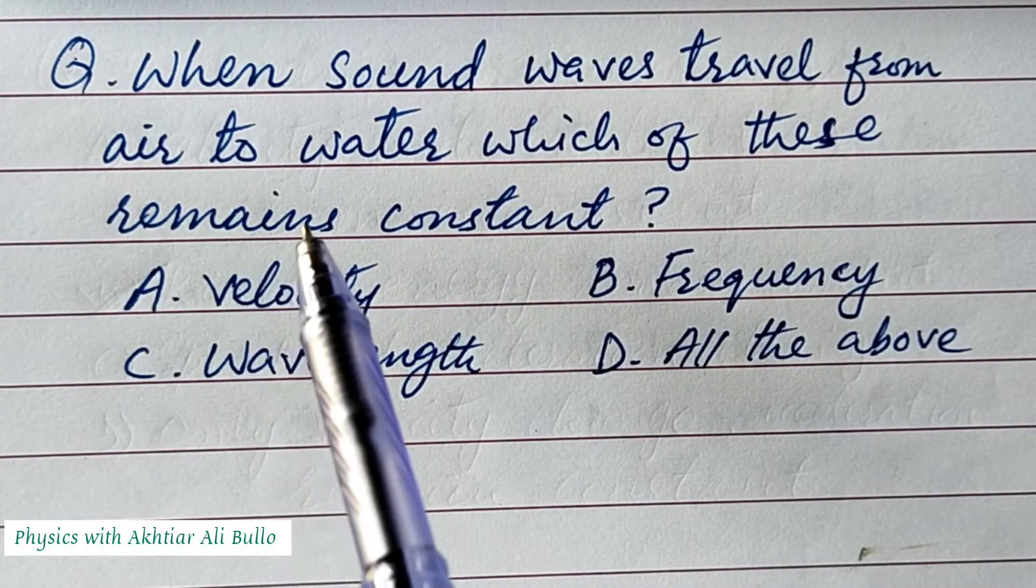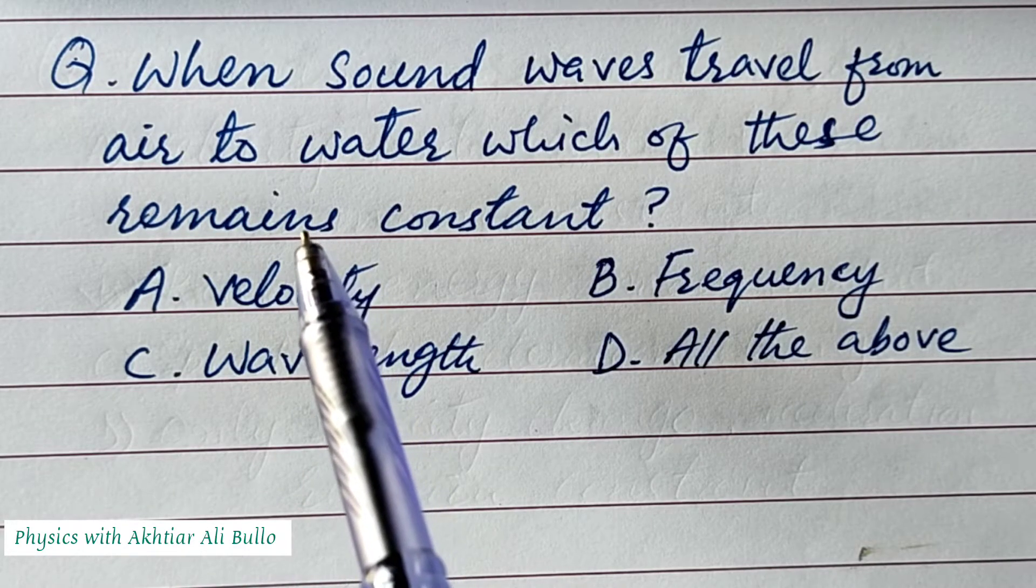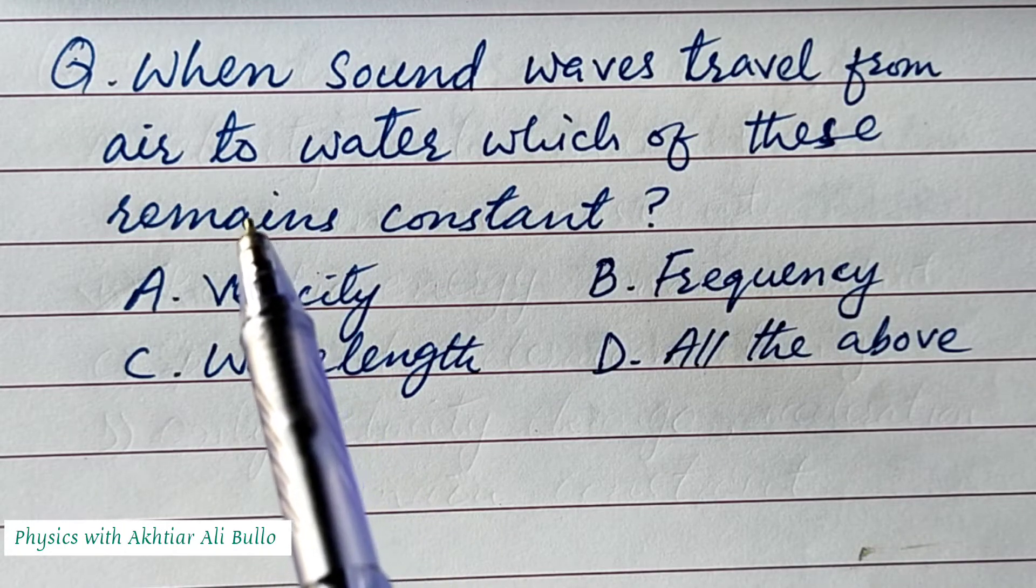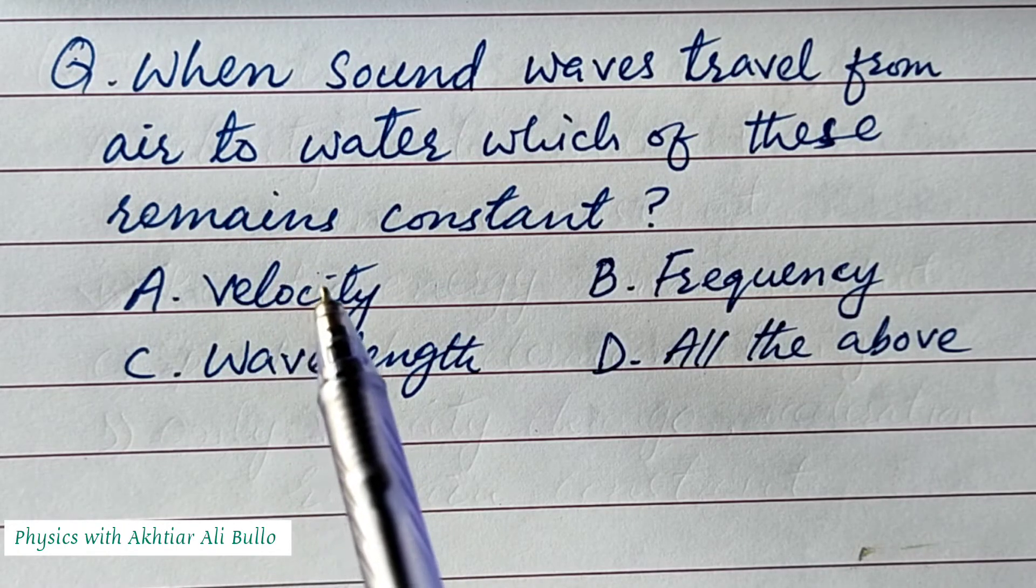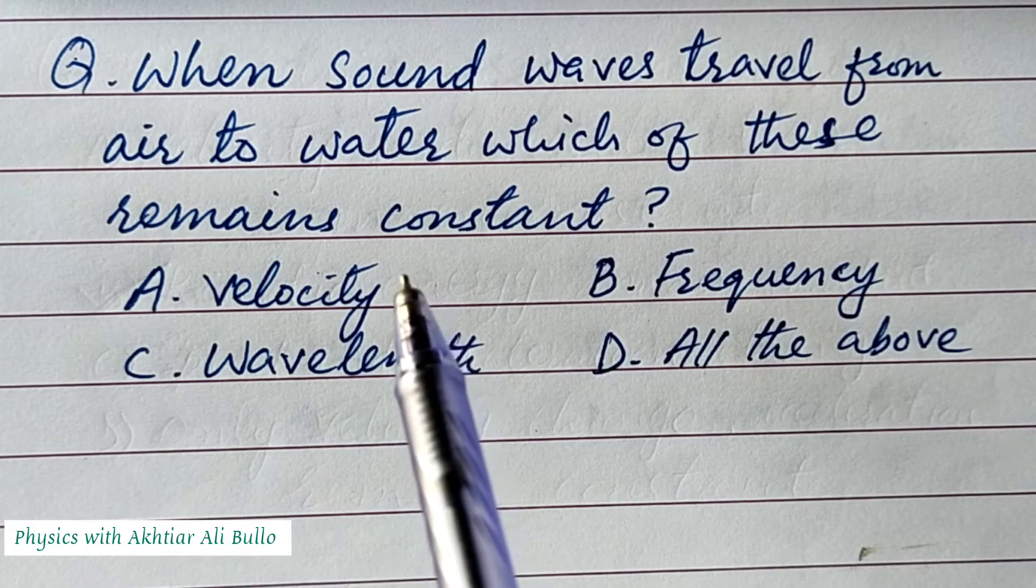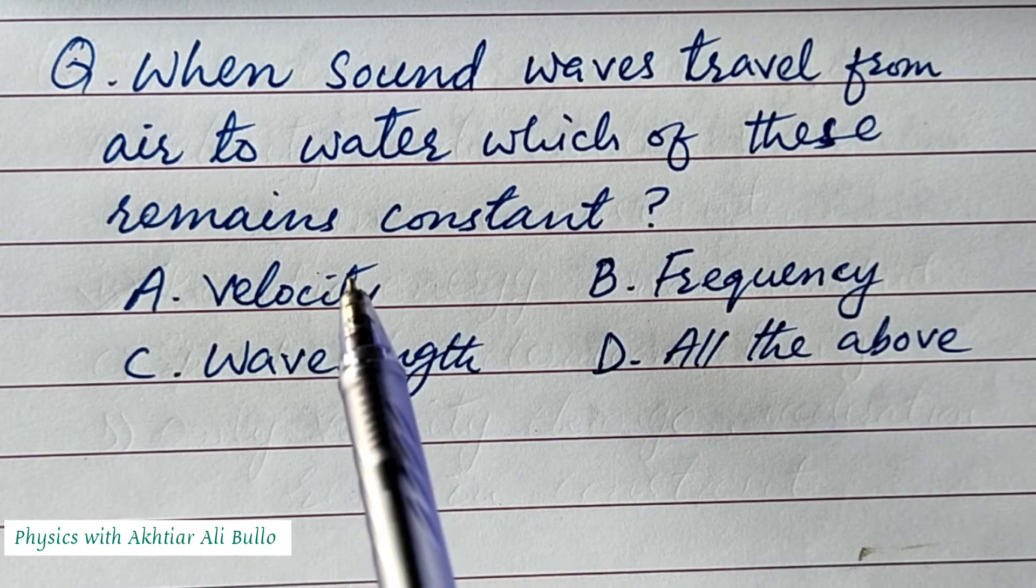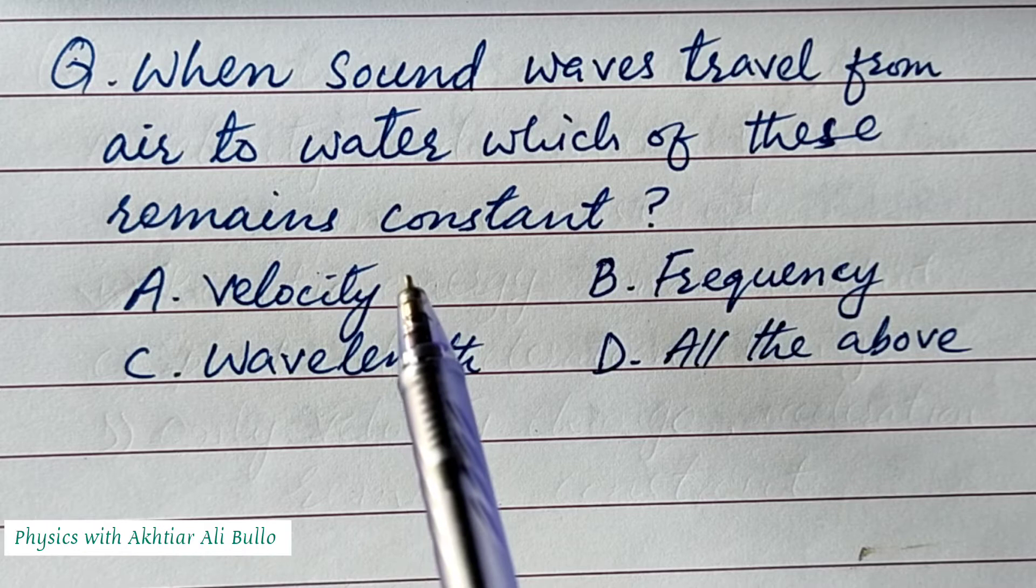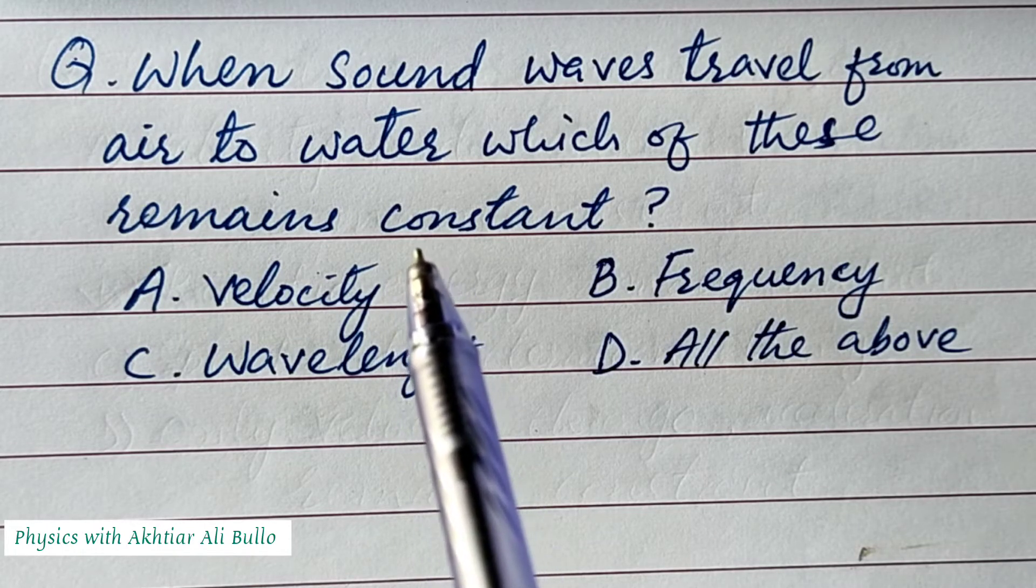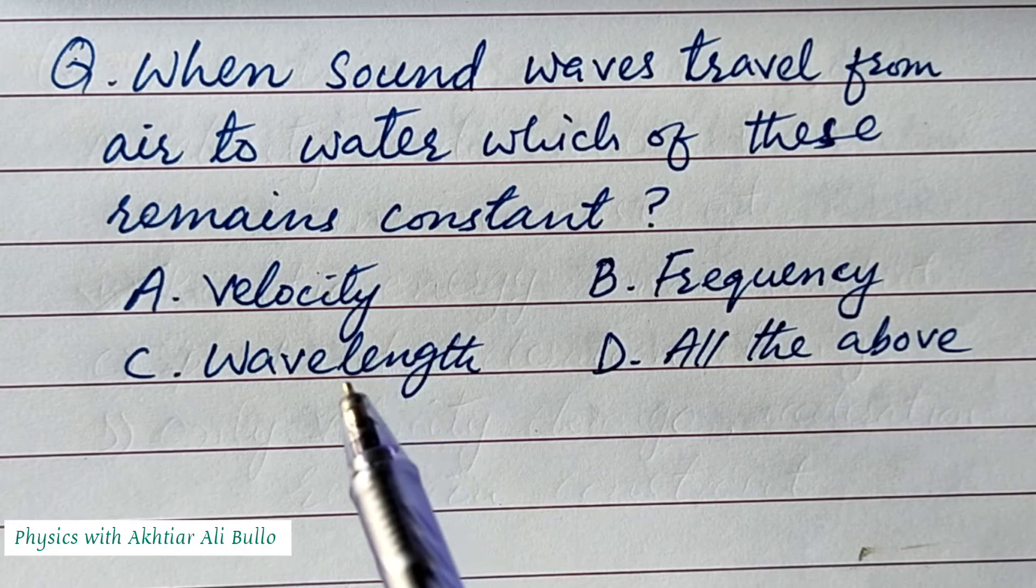Its speed or velocity changes because its speed or velocity is different in different materials, and also its wavelength and intensity changes because some of the waves are reflected and remaining waves are transmitted. That's why intensity and wavelength changes.